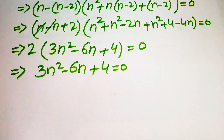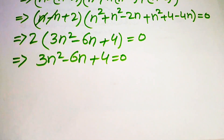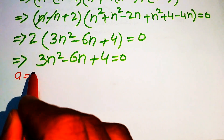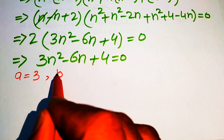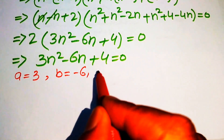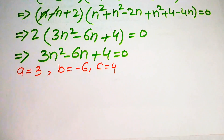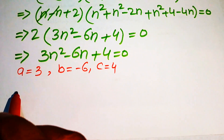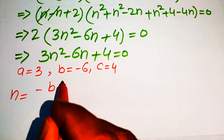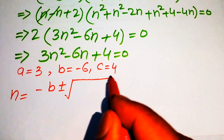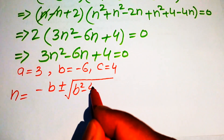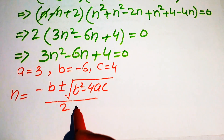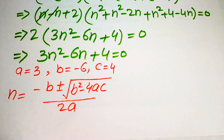This is a quadratic equation, so we solve it using the quadratic formula. The coefficients are a equals 3, b equals minus 6, and c equals 4. The quadratic formula is n equals minus b plus or minus square root of b squared minus 4ac, divided by 2a.